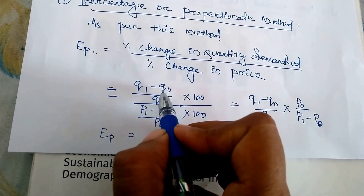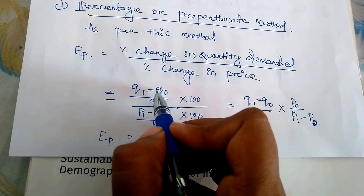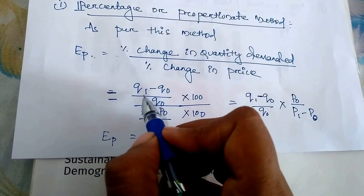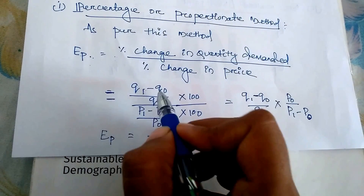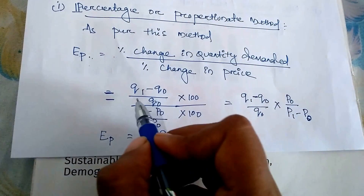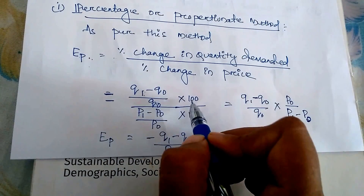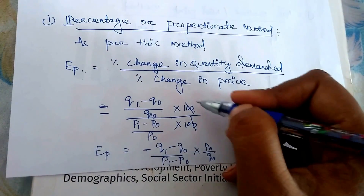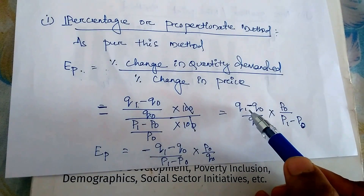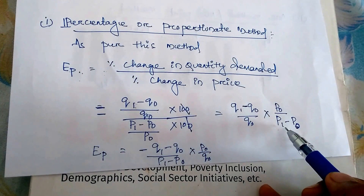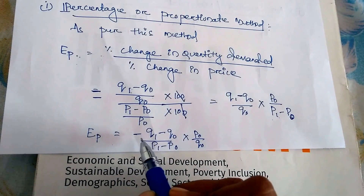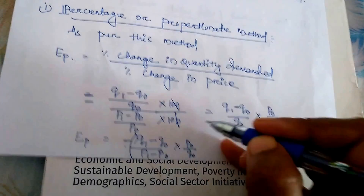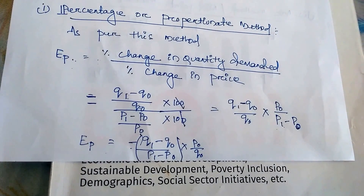The percentage change in quantity demanded is calculated as the difference between the new quantity and the old quantity. Similarly for price — if the preliminary price is 5 and new price is 50, we subtract 5 from 50. The full formula is: EP = (Q1 − Q0) / (P1 − P0) × (P0 / Q0).